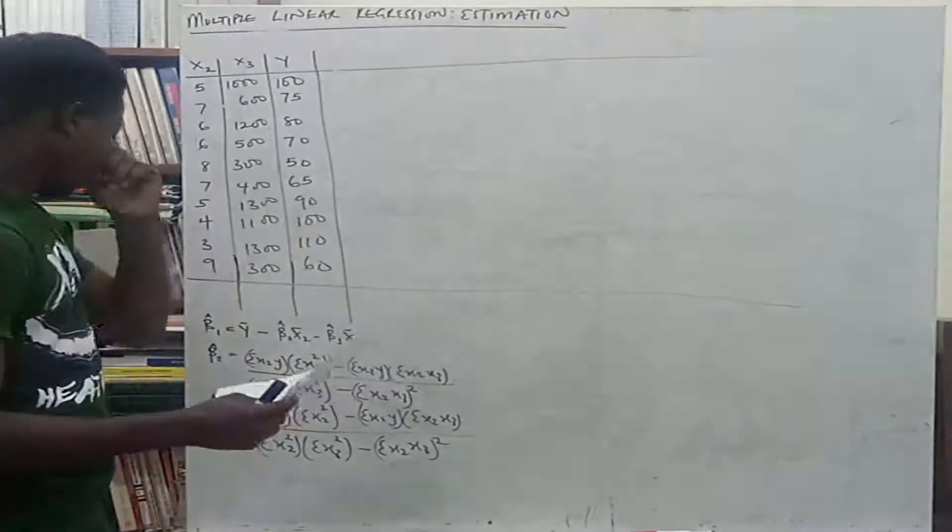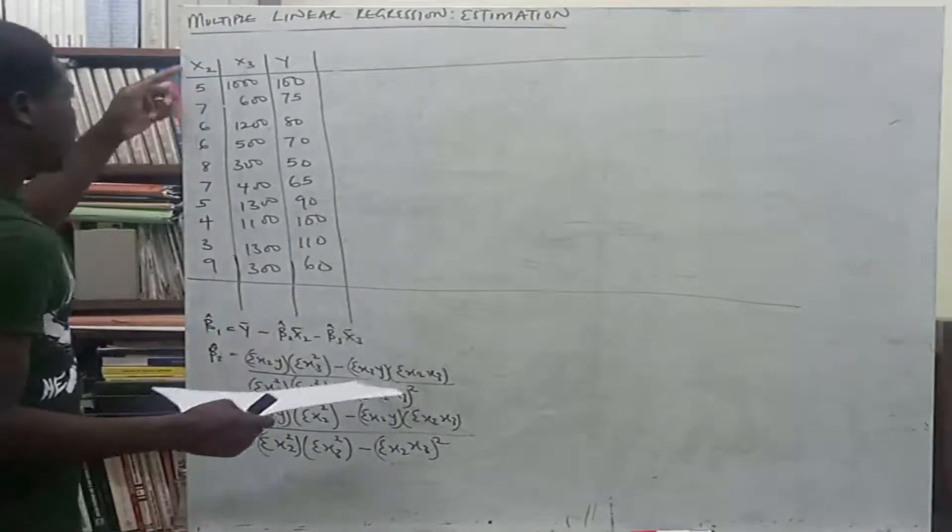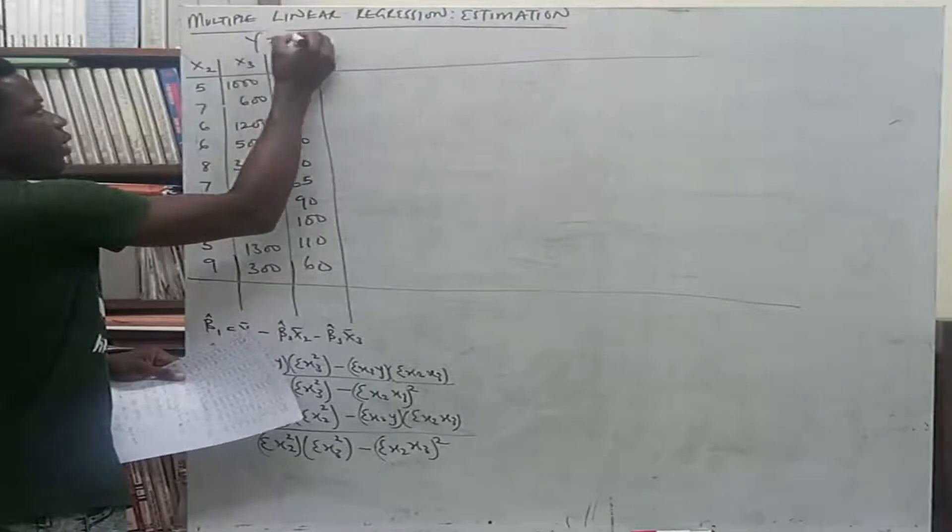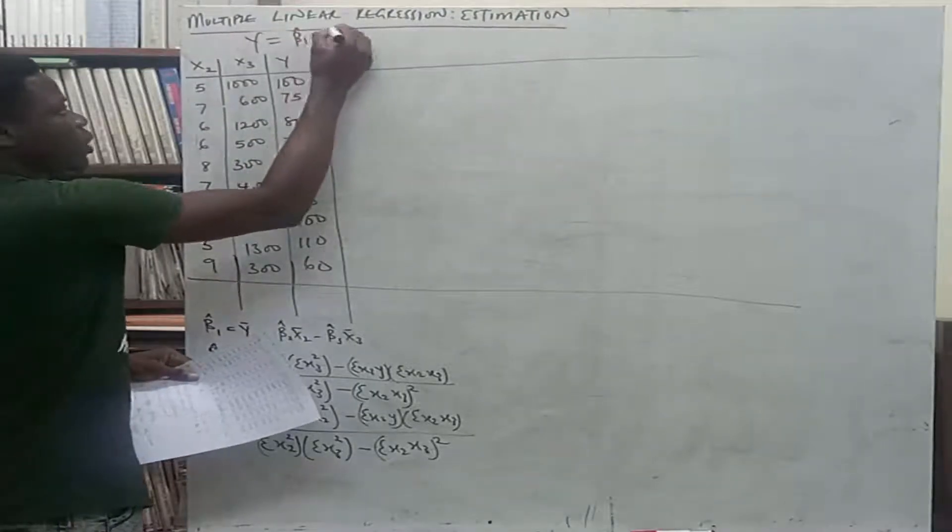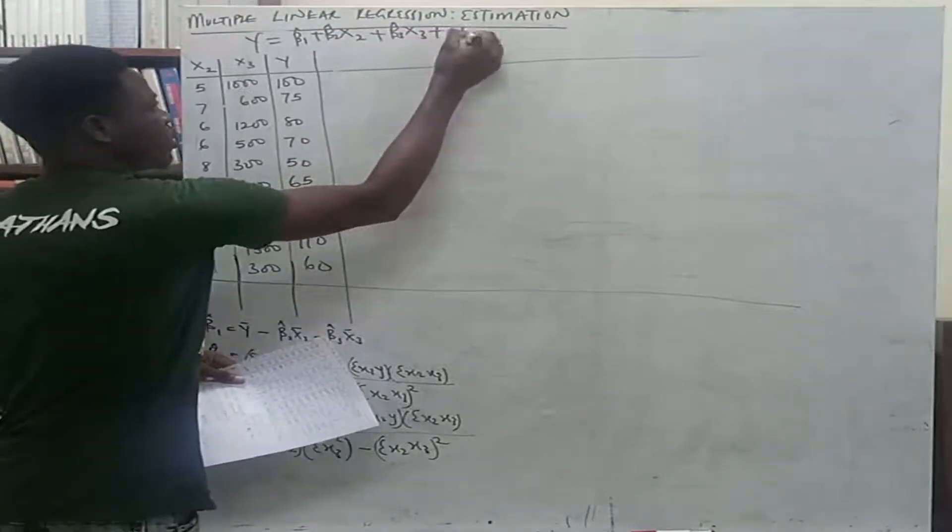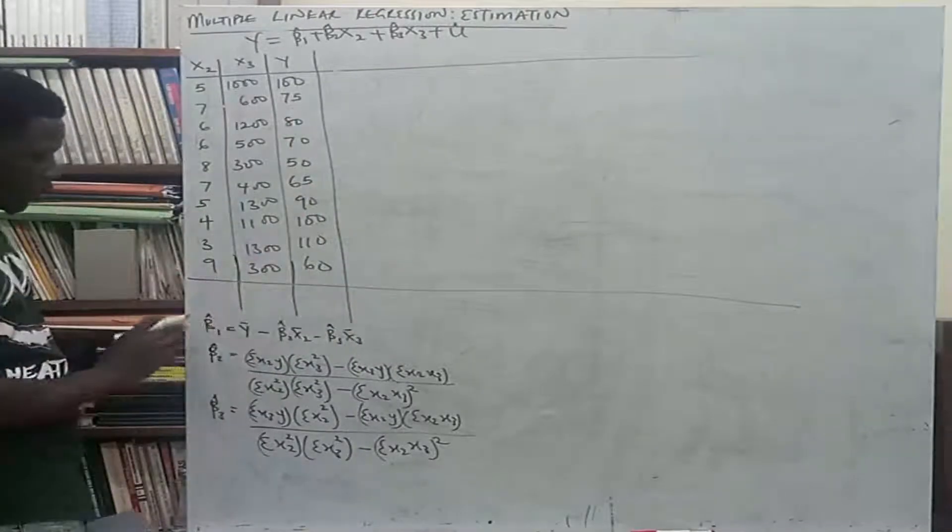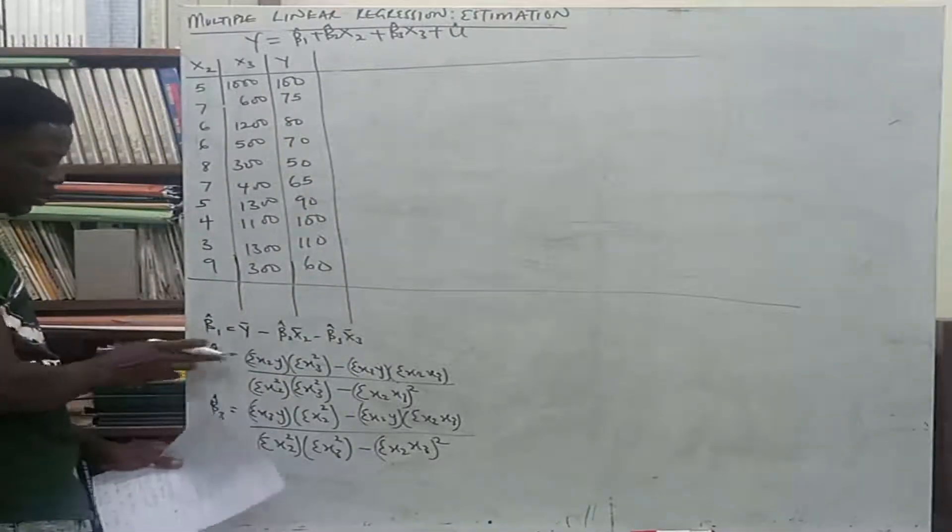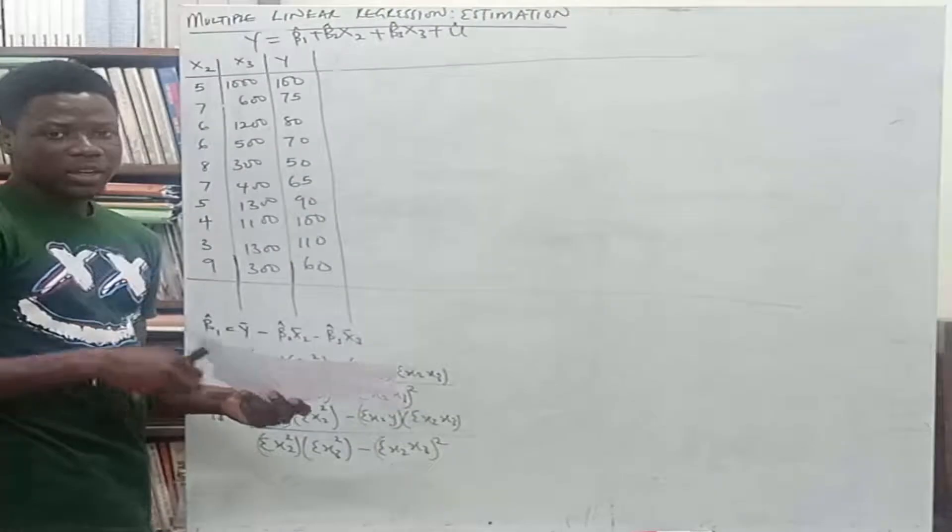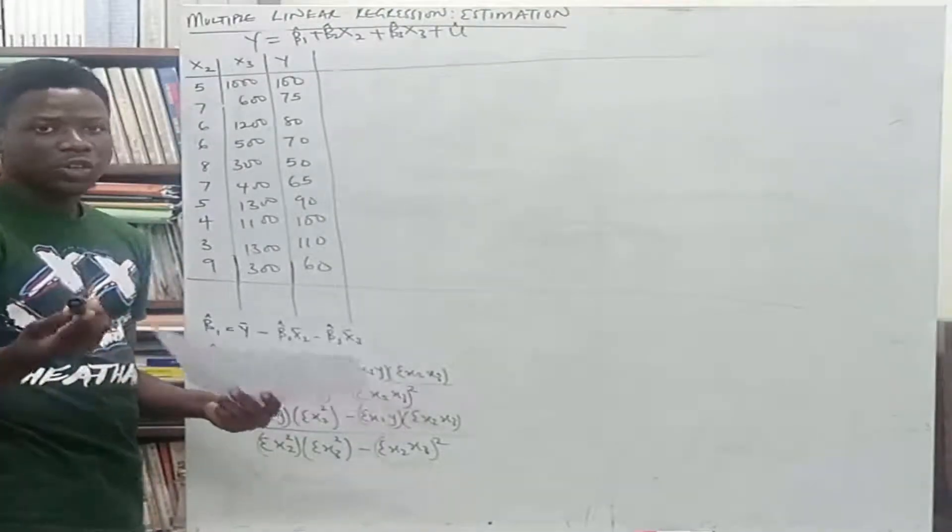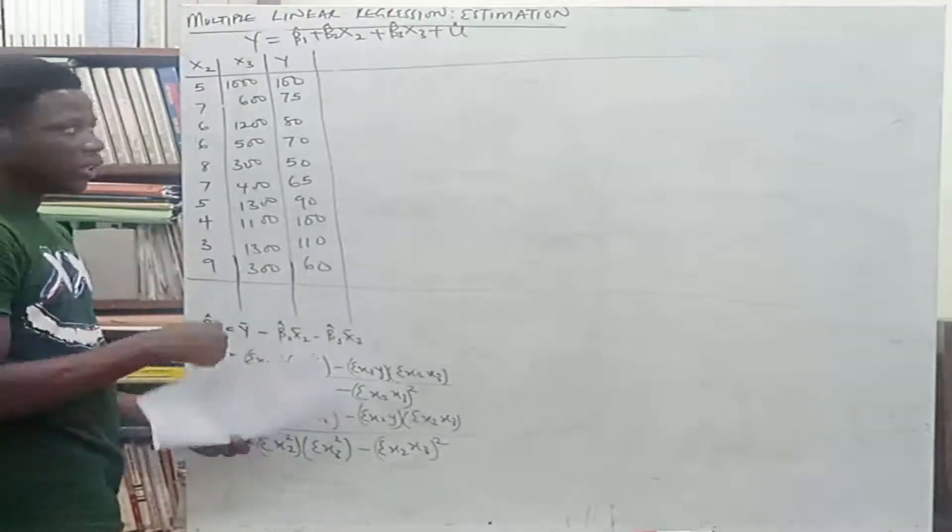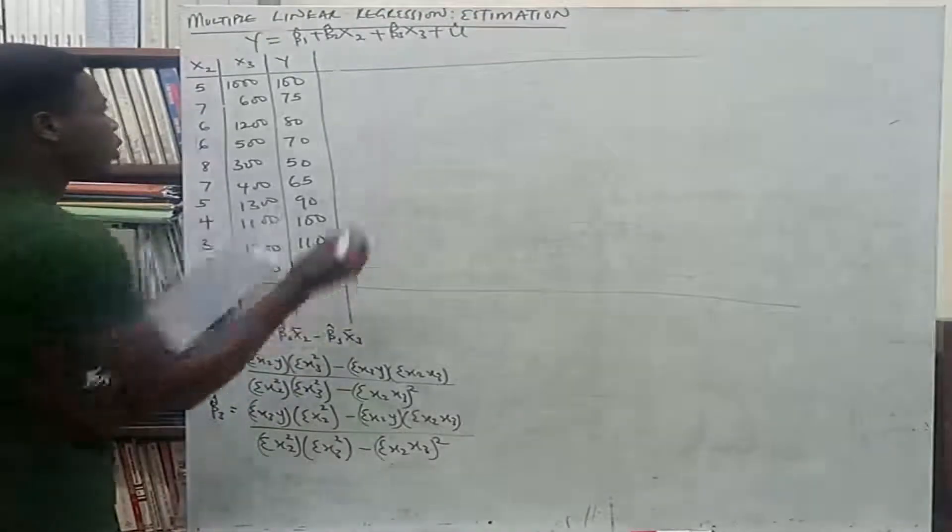We are going to be working with this example on the board here. We have our x2, x3, and y. So our regression equation will be y equals beta1 plus beta2 times x2 plus beta3 times x3 plus u. We want to derive, we want to get answers for beta1, beta2, and beta3. Remember in the last class I made mention of the fact that in estimation, what we work with is the deviation form. So this is the normal form of the data, so we have to convert this to the deviation form.